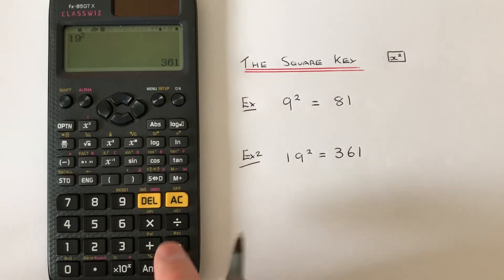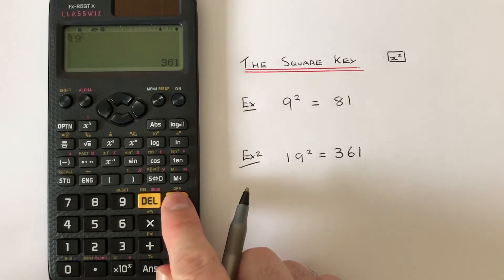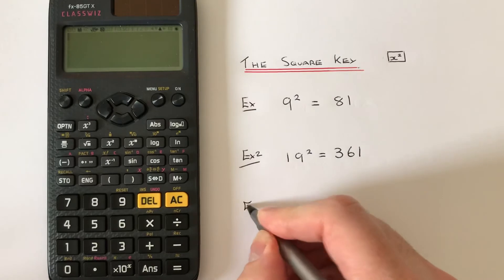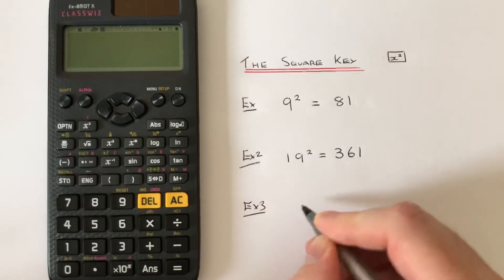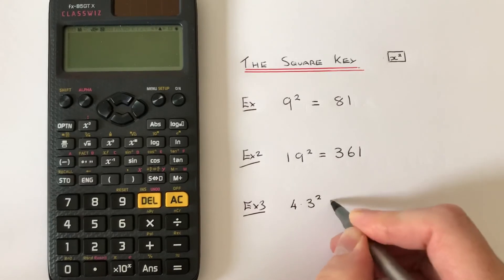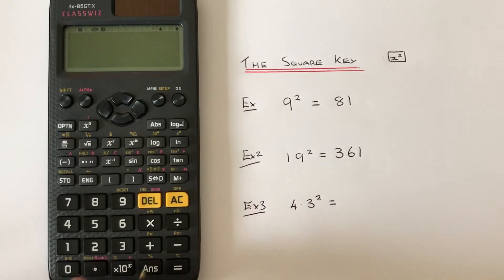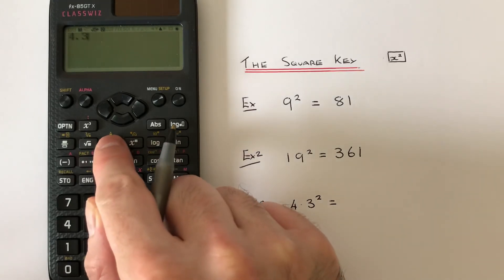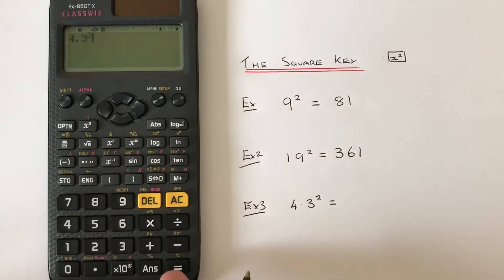Let's do one more example. Let's work out the square of a decimal. This time we've got 4.3 squared. So if we type in 4.3, then x squared, hit the equals. You can see the answer this time comes up as a fraction.